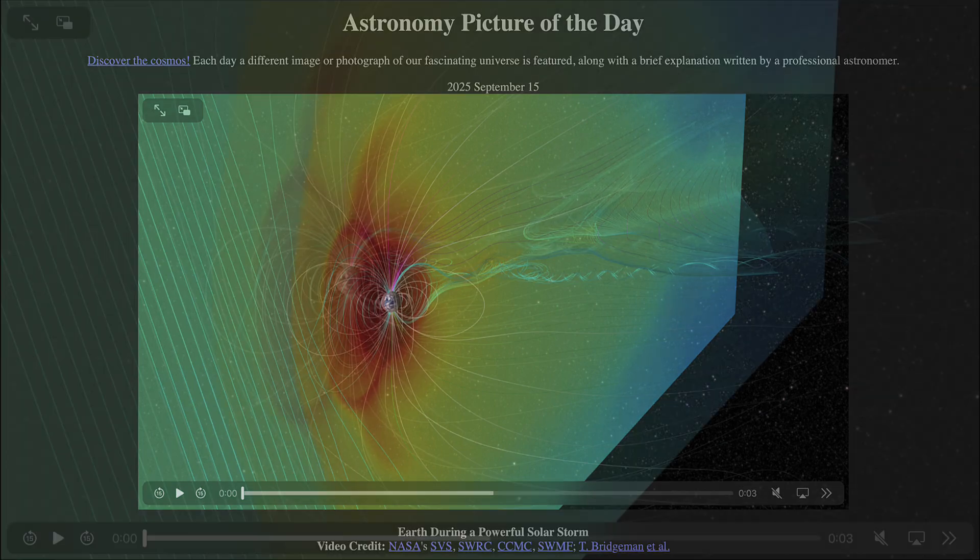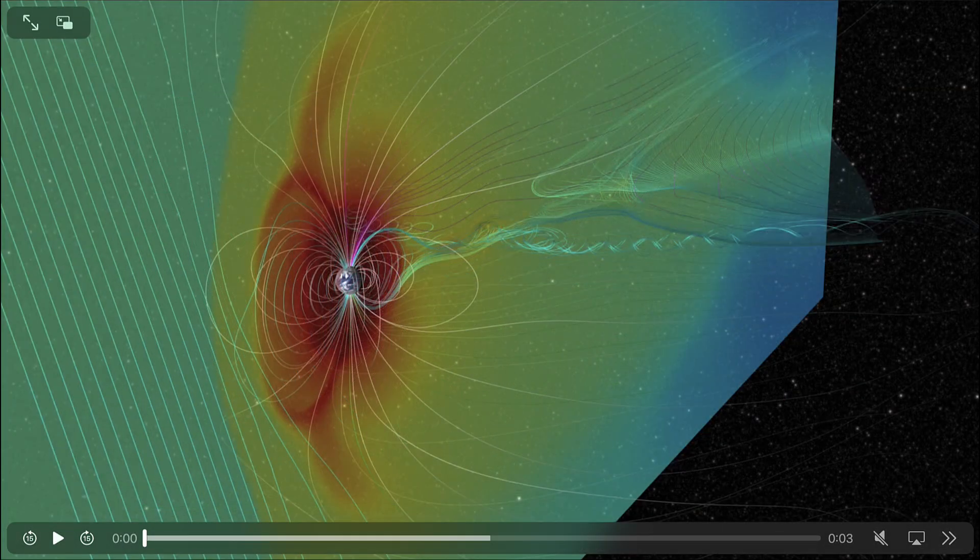So what do we see here? Well, here we actually see a computer model of what would have happened if a coronal mass ejection were to have struck Earth directly.